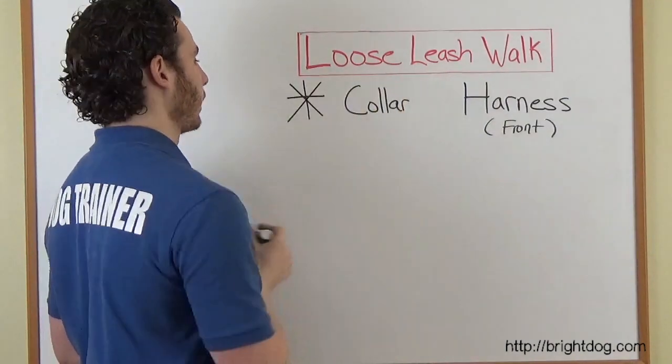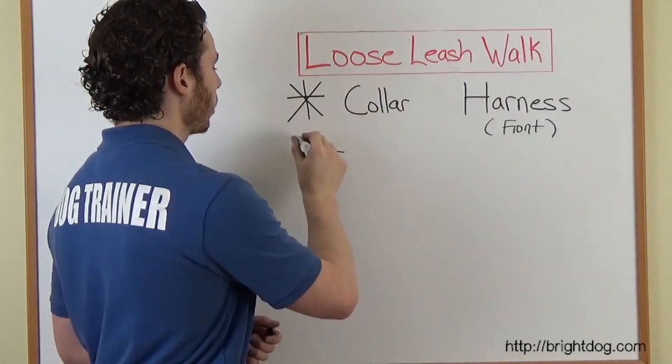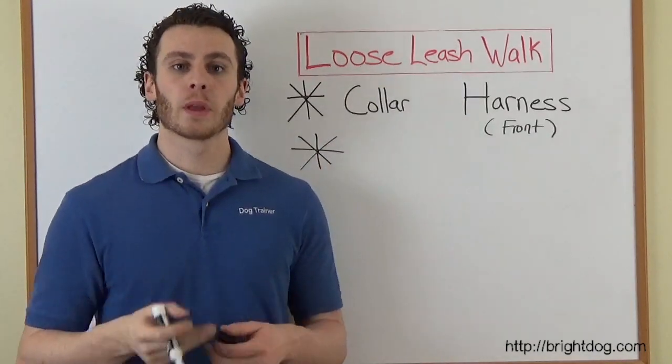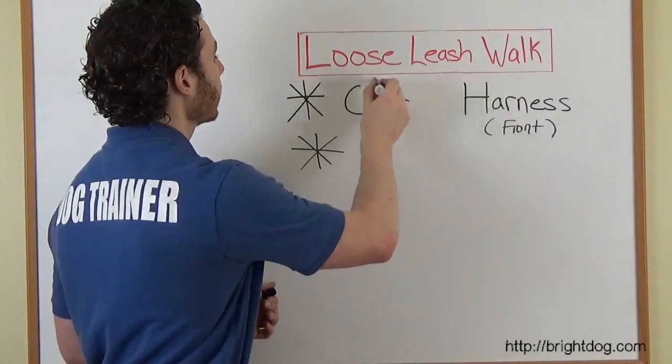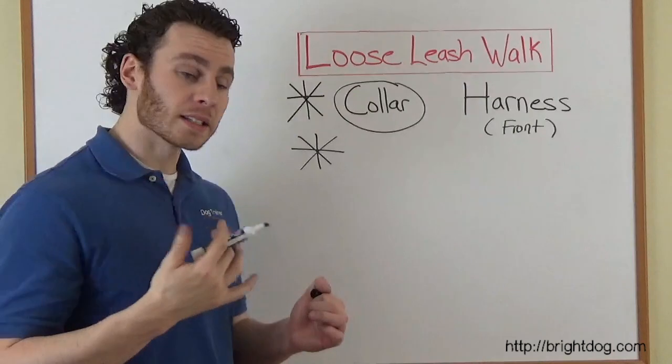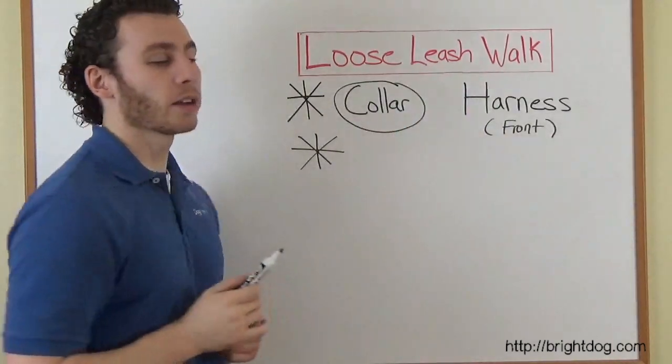So regular collar, regular harness. And the way we're going to train our dog not to pull, the end goal is that you only will need the collar. But in order to stay consistent, we need a harness as well.